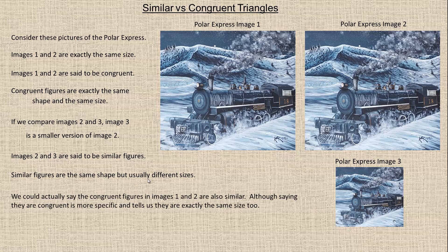Now I say usually — we could actually say that congruent figures are also similar, but it gives more information if we say they're congruent. If we say images one and two are congruent, then we're also saying they are exactly the same size. So similar figures are the same shape but usually different size — not always, but usually. But congruent figures have to be exactly the same shape and size.